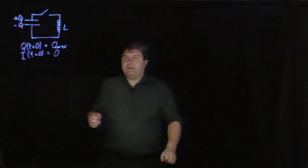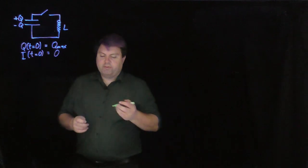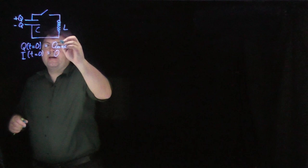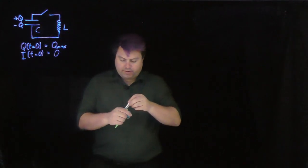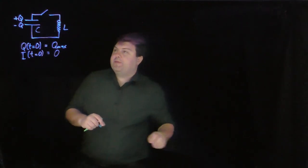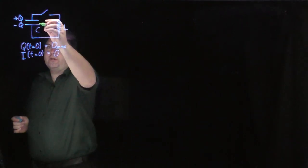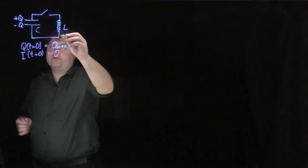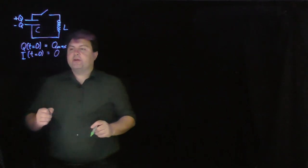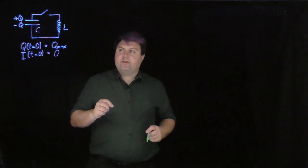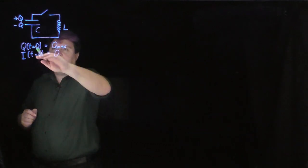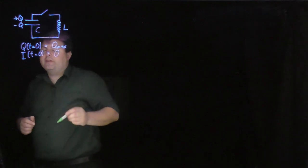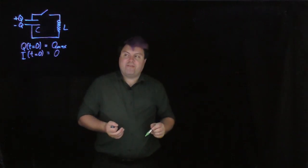Welcome. Here we have our last possible combination: a capacitor connected to an inductor with a switch. When we flip this switch, our capacitor will start with the maximum charge at time zero. Since there was no initial current, the inductor resists current, so our initial current will be zero at t equals zero. The charge should then flow around the circuit, and we'll see what happens.